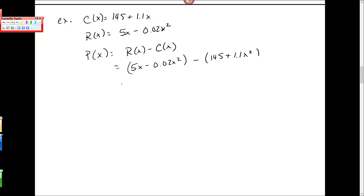I'm going to take these parentheses off and subtract. Distribute this minus to both the 145 and the 1.1. And then I'll get... I need to combine these two pieces. So negative 0.02x squared plus 3.9x minus 145 is your profit function.